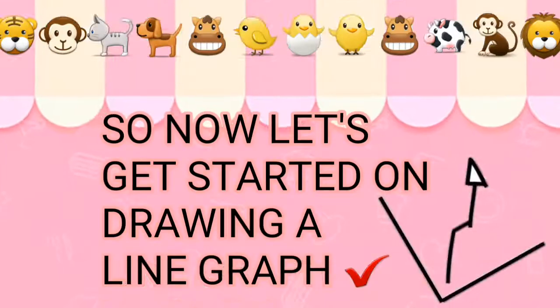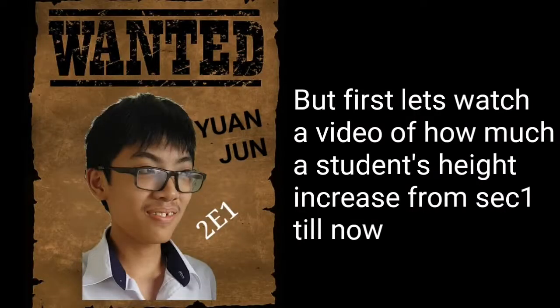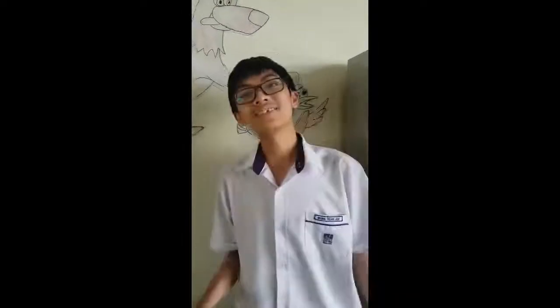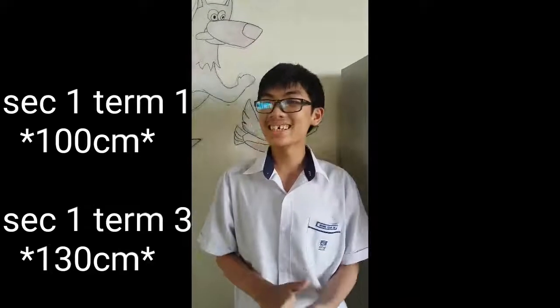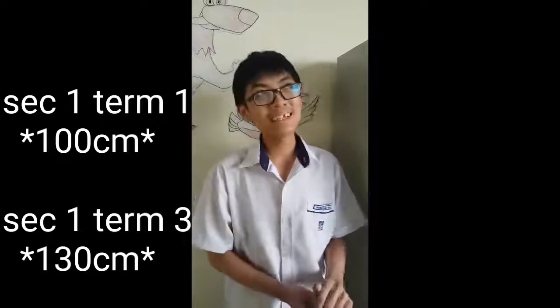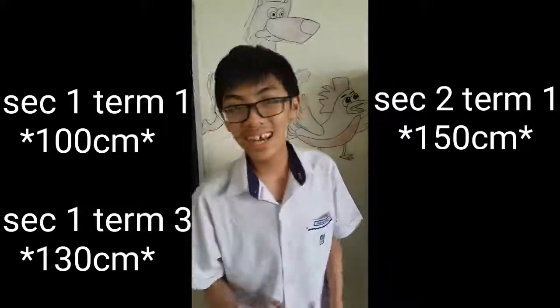So now let's get started on drawing a line graph, but first let's watch a video of how much a student's height increased from sec 1 to now. Sec 1 term 1, my height is around 100 cm. When I'm sec 1 term 3, I increased to around 130. When I'm sec 2 term 1, my height is 150. And when I'm sec 1 term 3, my current height is 180.